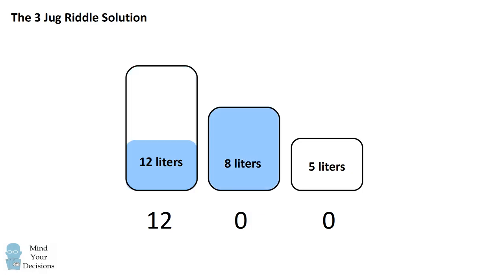First we'll pour 8 liters and fill up the 8-liter container. So that leaves 4 liters in the 12-liter container, and we filled up the 8-liter completely. We'll fill up the 5-liter container, so we now have the amounts of 3 and 5.